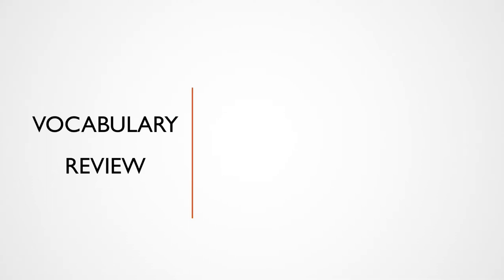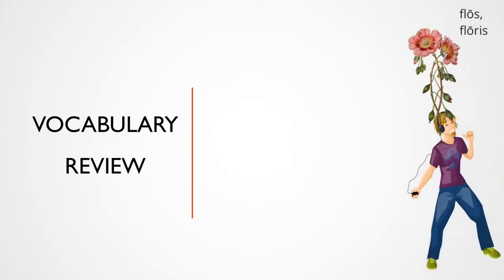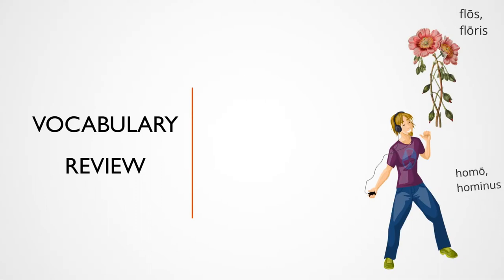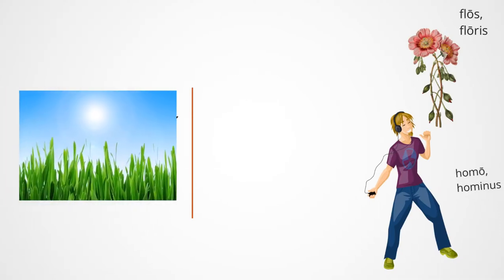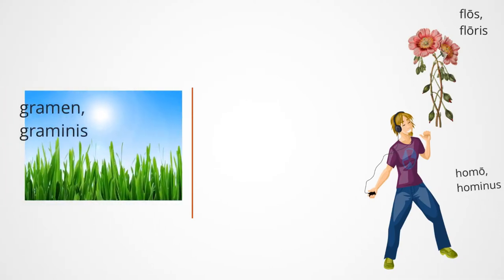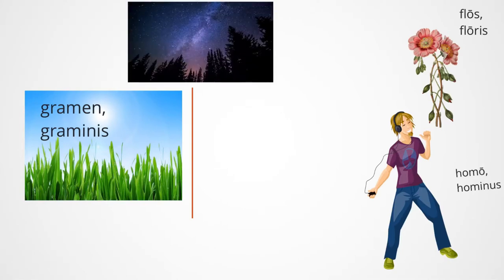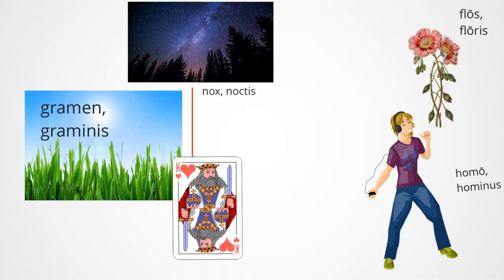First, vocab quiz. Let's see if you can give the Latin word for these nouns. What is the Latin noun for flower? It's floss floris. How about man? Homo hominis. Grass? You got it, gramin graminis. How about night? This one's a cool sounding one, nox noctis. And then king, a classic noun, rex regis.